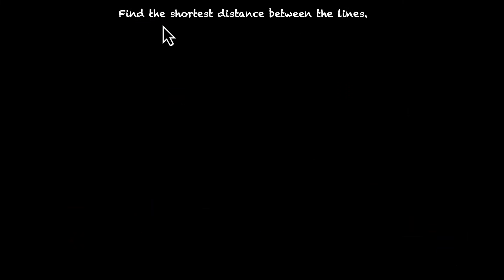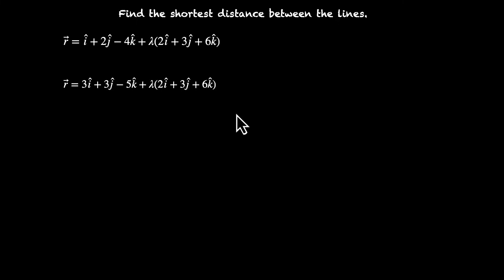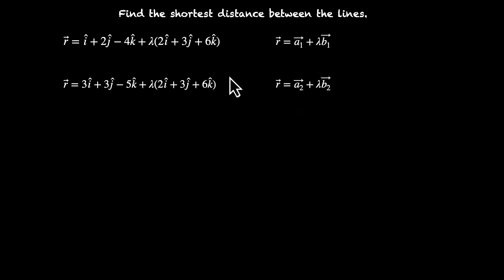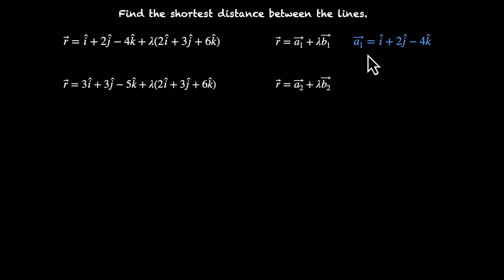Let's practice this. Find the shortest distance between the given lines. The lines are in the form R equals A1 plus lambda B1 and R equals A2 plus lambda B2. Looking closely, B1 and B2 are the same: 2I cap plus 3J cap plus 6K cap. This means the two lines are indeed parallel. So A1 vector is I cap plus 2J cap minus 4K cap, and A2 vector is 3I cap plus 3J cap minus 5K cap.